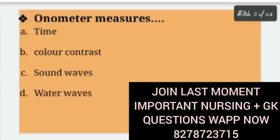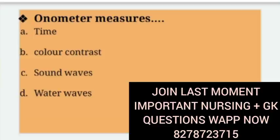Next question: What does an Onometer measure? Onometer kya measure karta hai? Options: Time, Color Contrast, Sound Waves, Water Waves. The right answer is option A — Time.